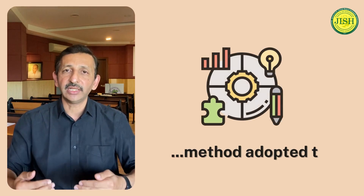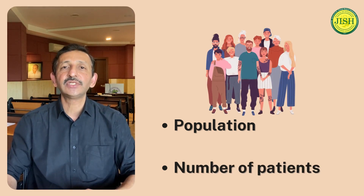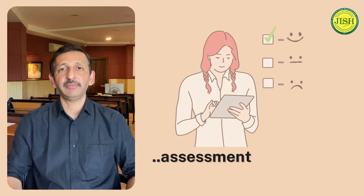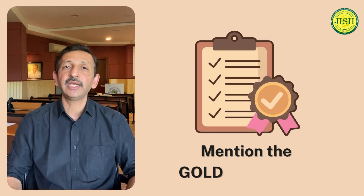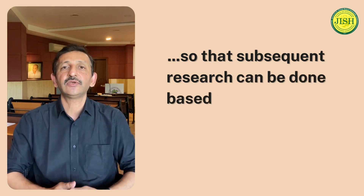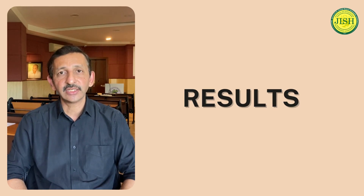Next is Material and Method — a very straightforward section in which the researcher writes whatever method was adopted to complete the study. This includes the population studied, the sample size, and the number of patients studied. The researcher also writes the assessment method, how frequently it was done, and if there is a gold standard of assessment, that should be mentioned so that subsequent research can build on it.